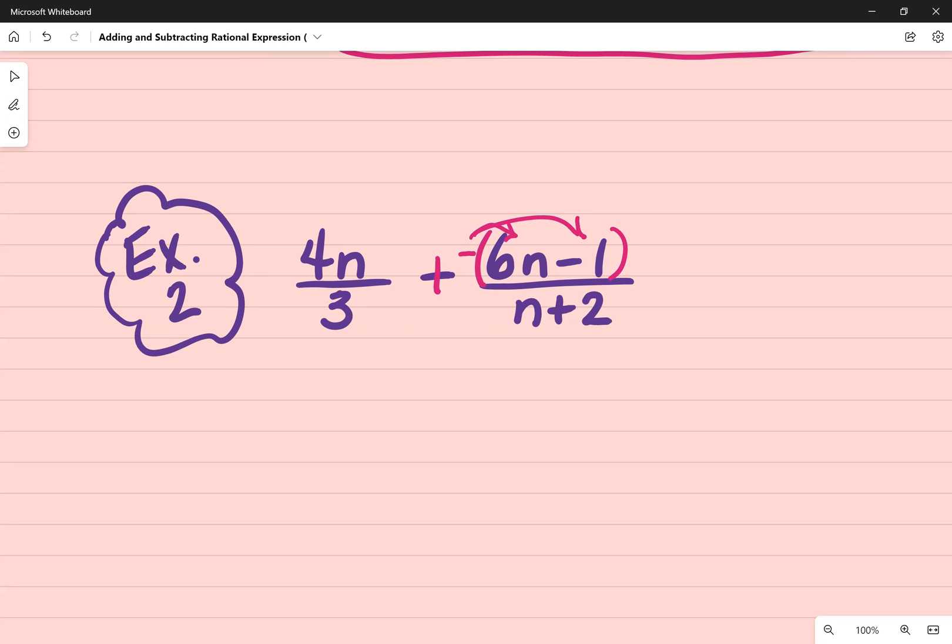So you'll remember to distribute that negative to each one of those terms. So as a matter of fact, what I would do is just go ahead and rewrite that. So I have 4n over 3 plus negative 6n plus 1, because that negative 1 on the outside comes another negative 1, it's going to turn to a positive 1. And this is all divided by n plus 2.